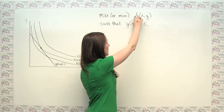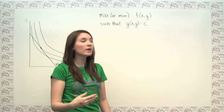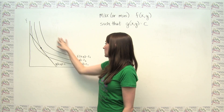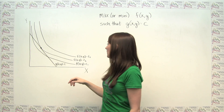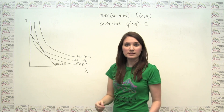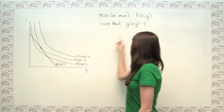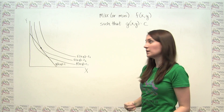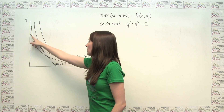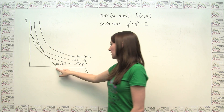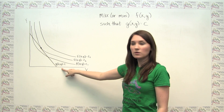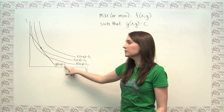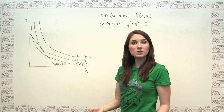So we have two parts: an objective function that we're trying to get the most extreme value for, and a constraint that must be satisfied. In the utility maximization context, f(x, y) is the utility function we're looking to maximize, and g(x, y) is the budget constraint — meaning total expenditure on the two goods has to equal our income.